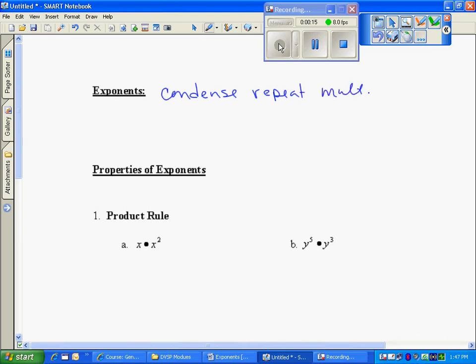When multiplication is repeated, such as x times x times x with the same value, we can condense that to x cubed. This is expanded notation, and this is exponential notation.